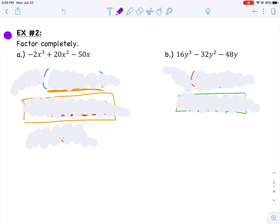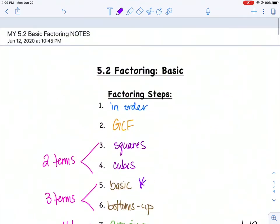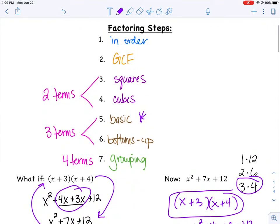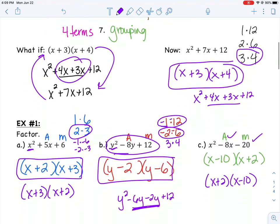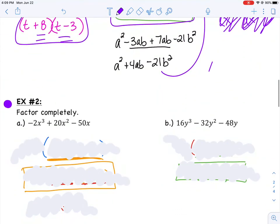Remember when we talked about factoring, there are seven steps that you should follow every single time. Number one, make sure it's in order, highest exponent to lowest. Number two, look for our greatest common factor. Then look to see how many terms there are, two terms, three terms, or four terms. Remember, if there's four terms, we're going to do grouping. But if there's three terms, we're going to try our basic factoring. Look at those for now, and we'll add to them in the next sections.